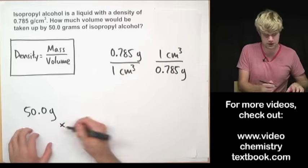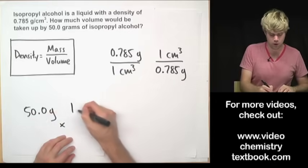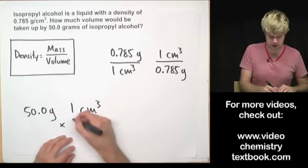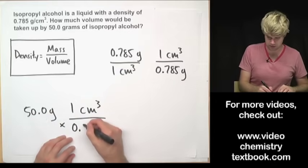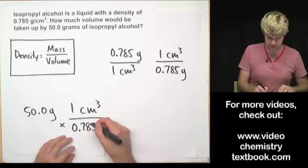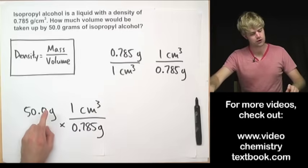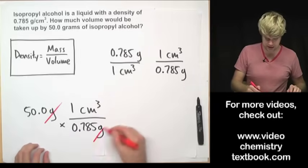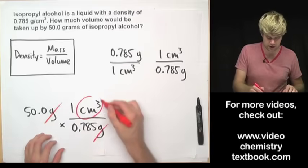So 50.0 grams times this, one centimeter cubed divided by 0.785 grams. Grams up here, grams down there so they cancel out, so I know that I used the right conversion factor.